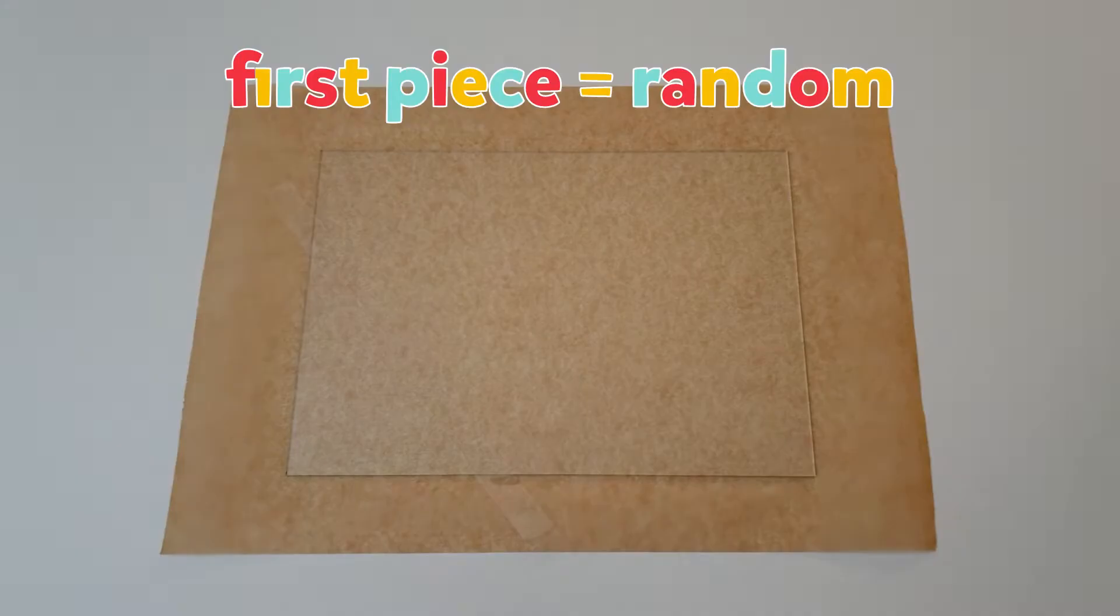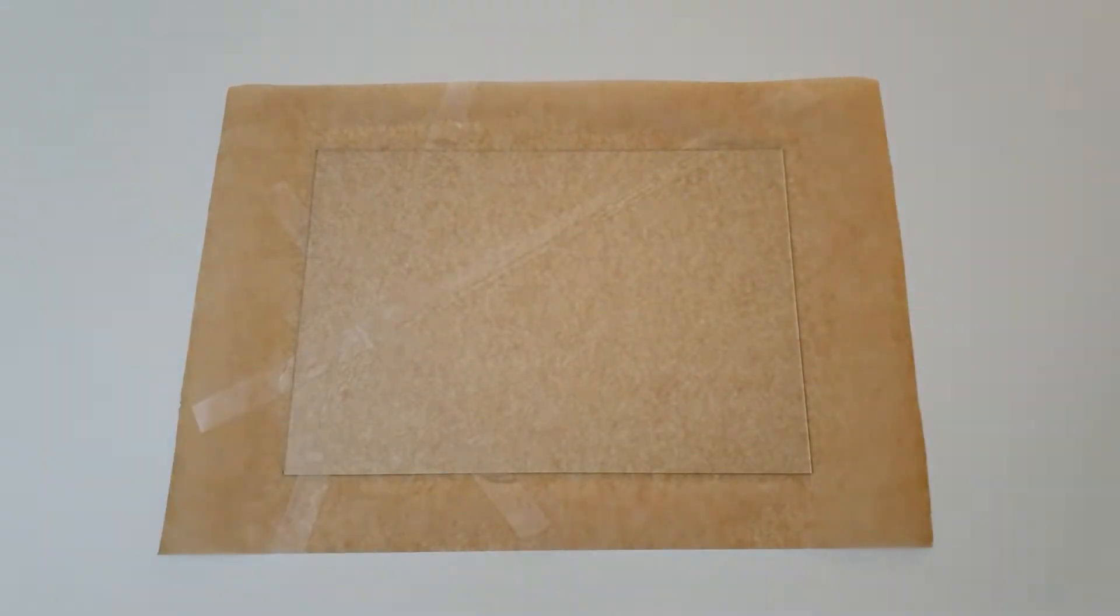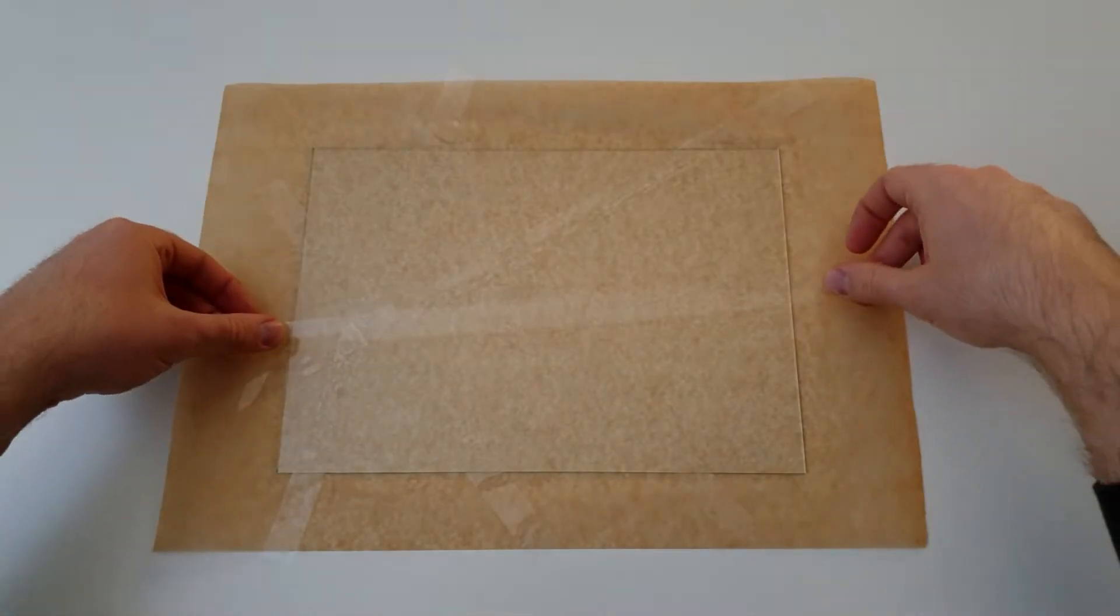Let's use everything we've learned to make two pieces of polarized art. This first piece is going to be pretty random. I'm going to place the tape on top of the glass in all sorts of different directions.